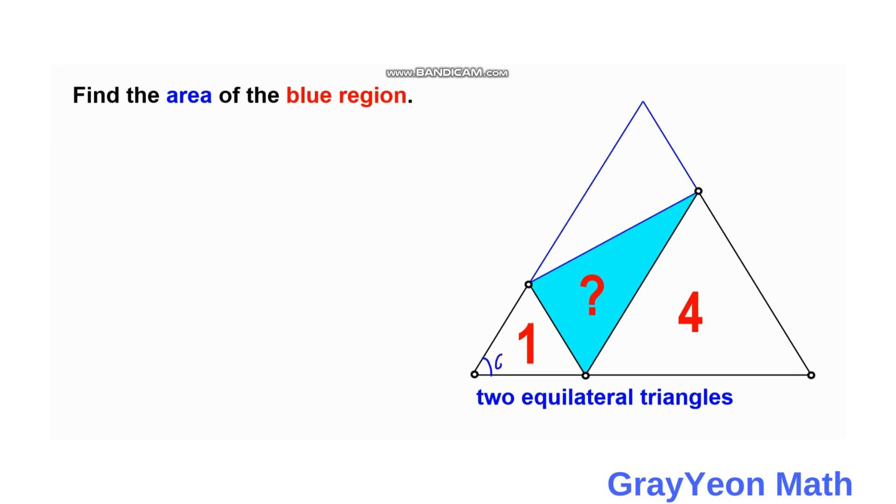So this angle is 60 degrees, and this angle on the right is also 60 degrees. Since we have this, we form this larger triangle.